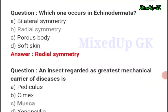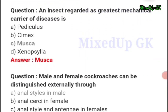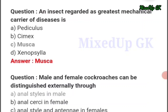Next question: which one occurs in Echinodermata? The answer should be option number B: radial symmetry. Next question: an insect regarded as the greatest mechanical carrier of disease is — the answer should be option number C: Musca.